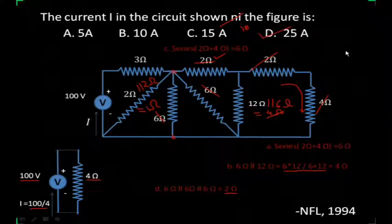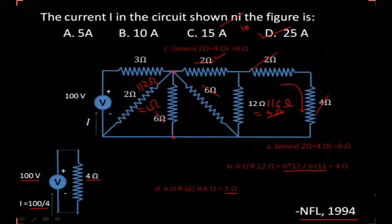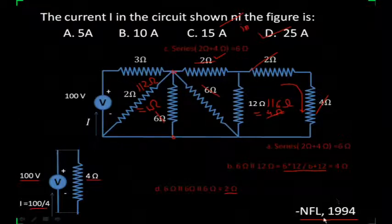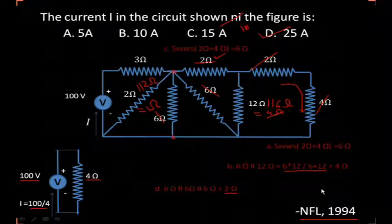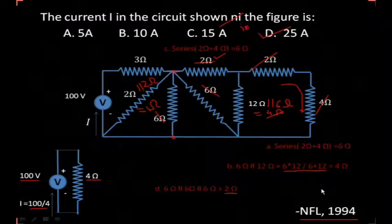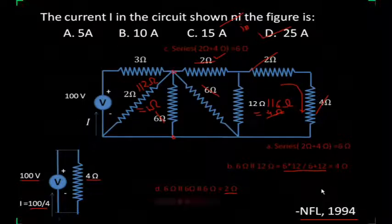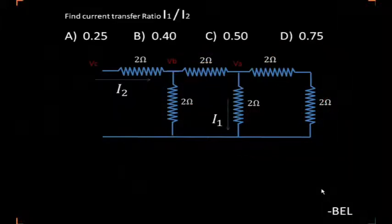So 100 volts upon 4 ohm gives the desired current — 100 upon 4, that is 25 amperes. This question was asked in NFL. Most questions we discuss in these sessions are from competitive exams. These exams always design questions so you can solve them smartly, not by KVL or KCL. They want you to use the easiest possible method, and with practice you will develop the caliber to do so.